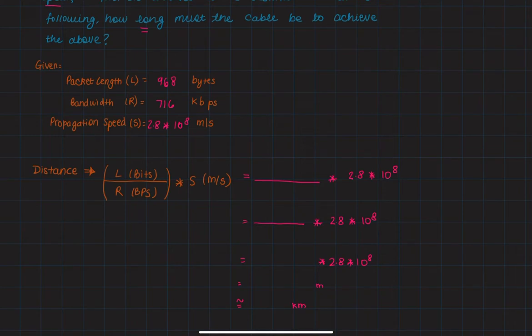The equation for distance is L, which is our packet length, divided by R, which is the bandwidth, multiplied by S, which is the propagation speed.